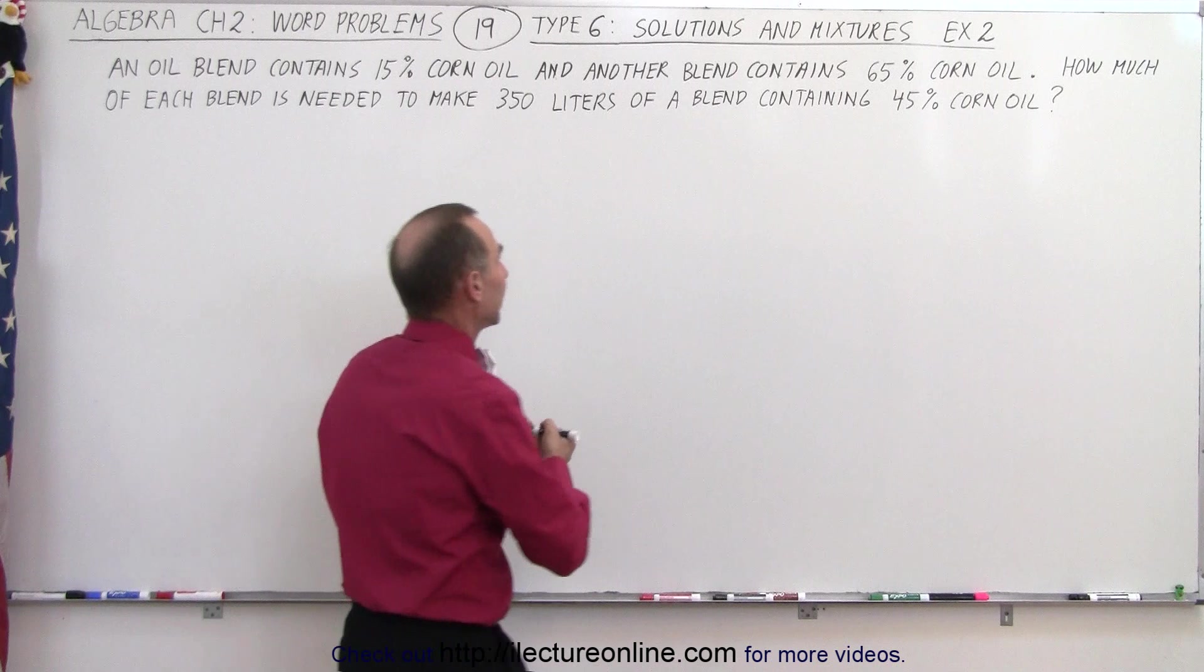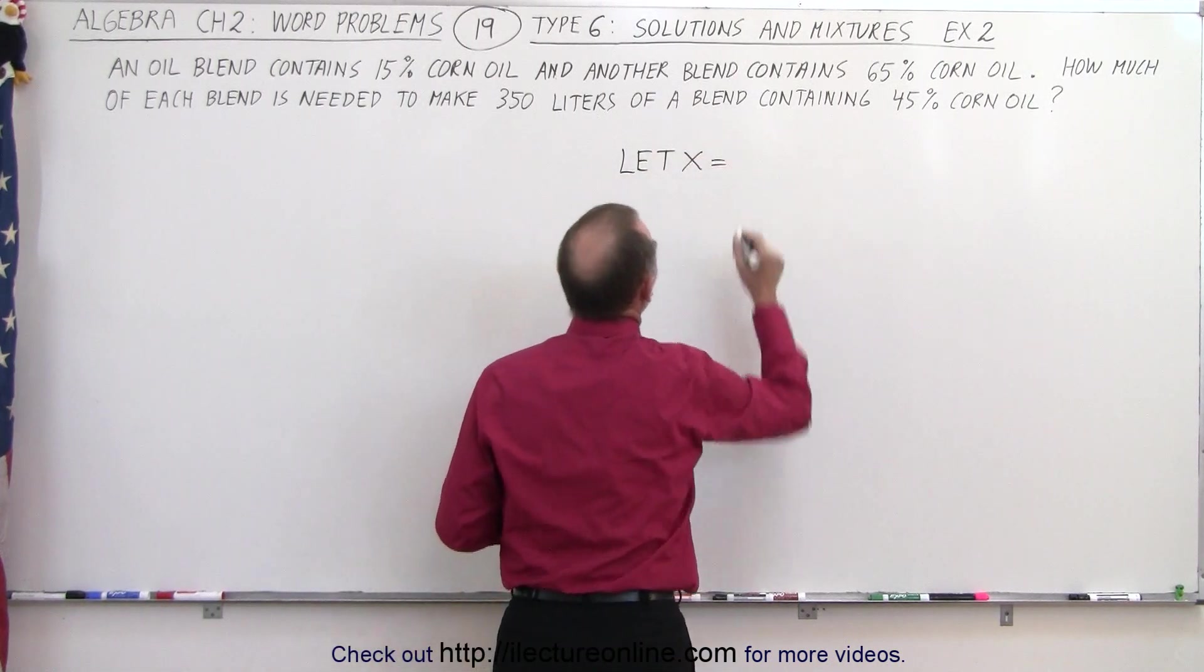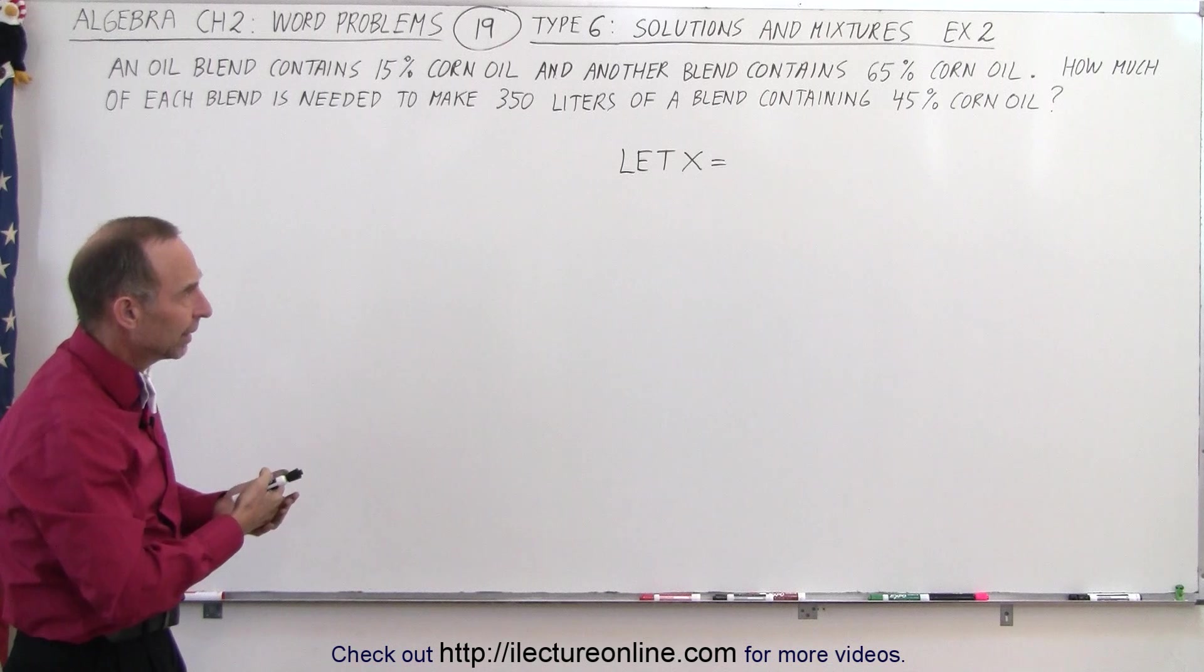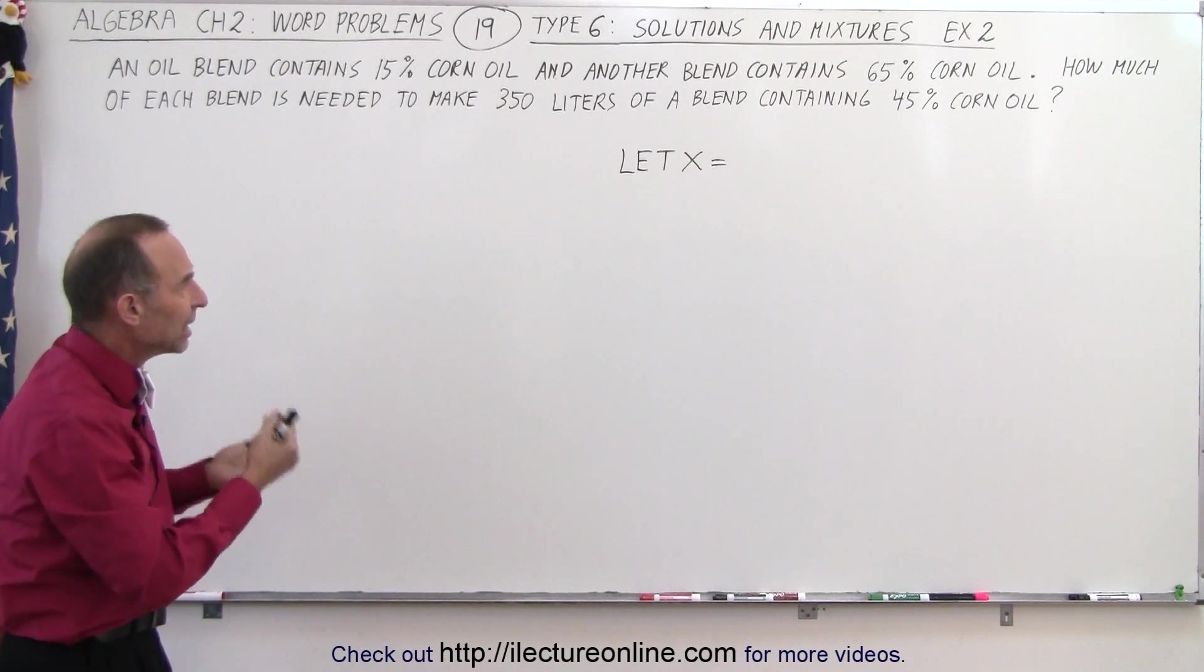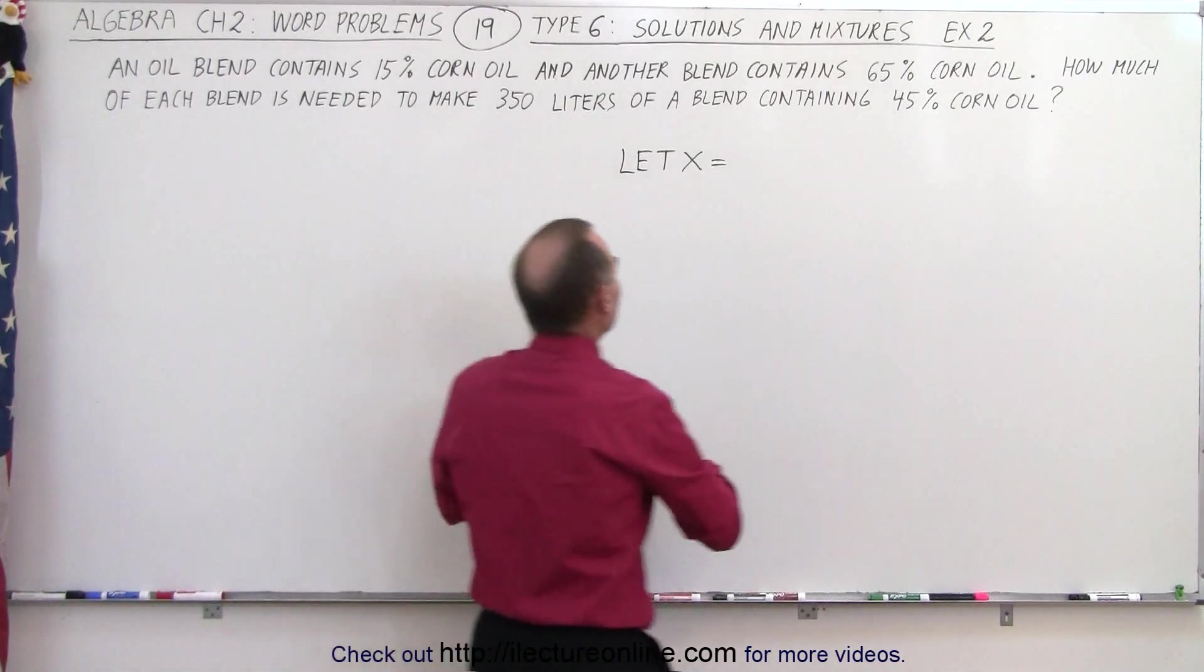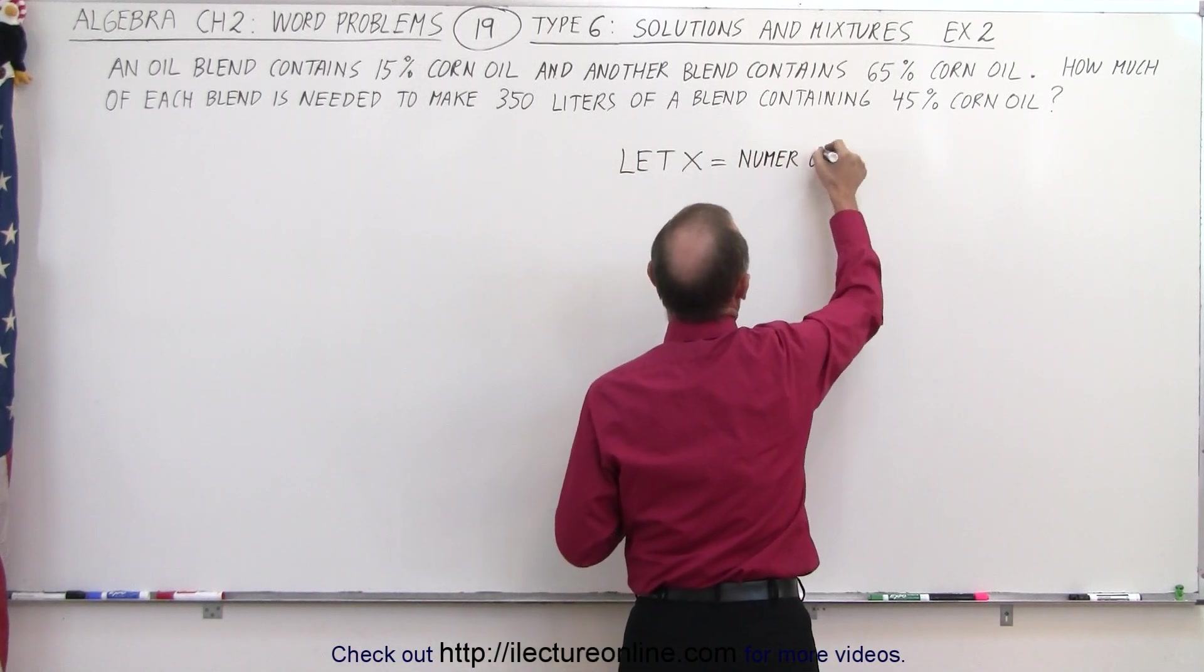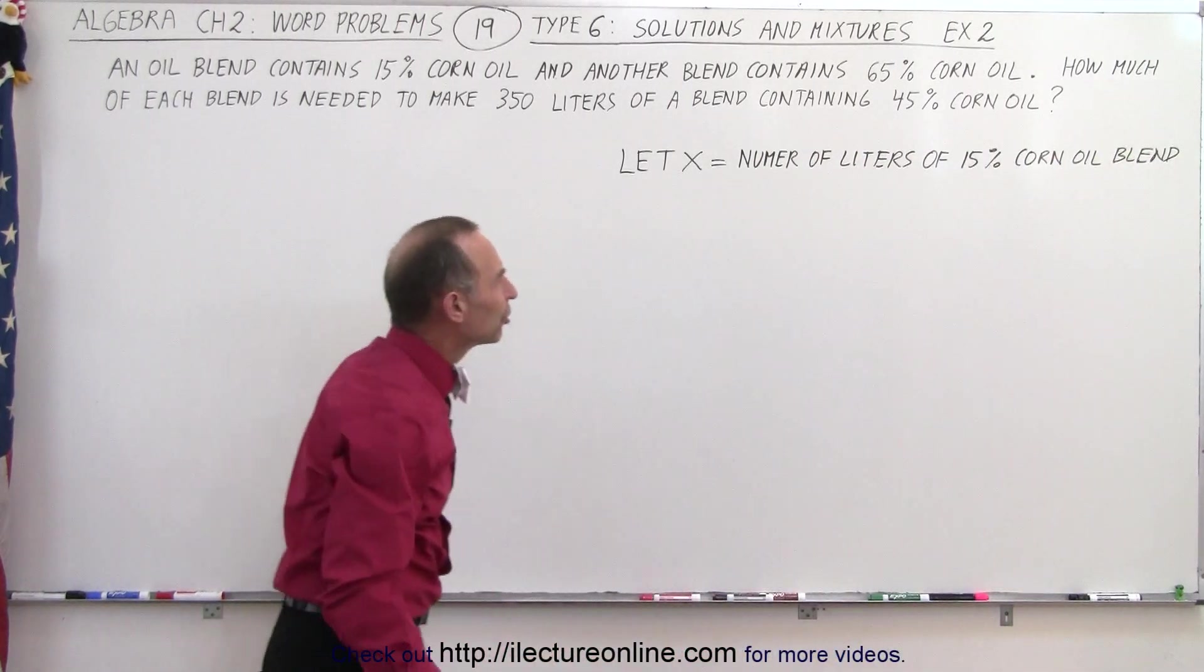We will start with letting x equal something. Let x equal, and since we're adding solutions together and the content of the solutions is in liters, the amount of the solutions is in liters, we should let x equal the number of liters of one of the solutions. So let x equal the number of liters of the 15% corn oil solution. So let's call it blend instead of solution here.